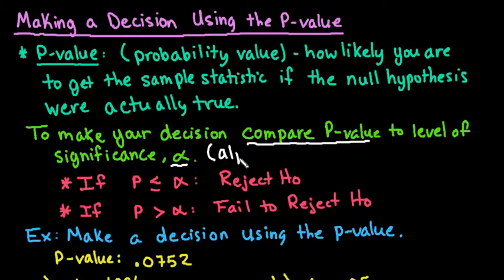Alpha is always going to be determined before you start the hypothesis test. The most commonly used alpha level is 5% or 0.05.